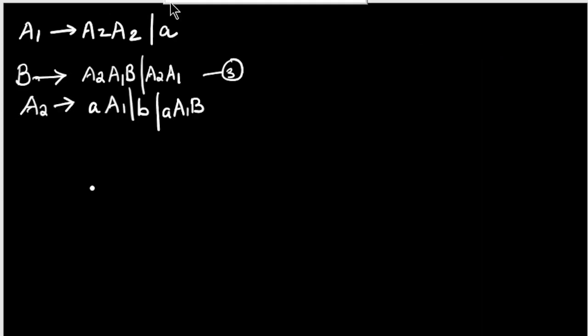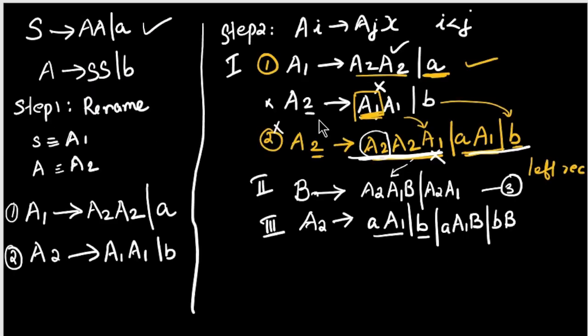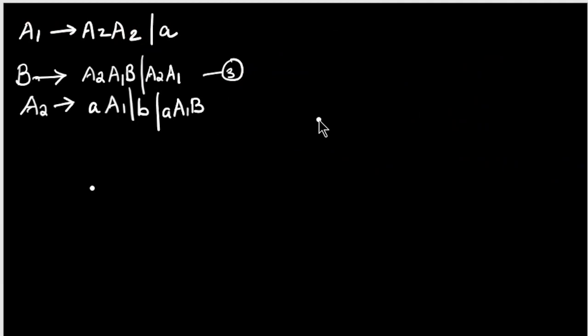After steps 2 and 3, our productions are: A1 gives A2 A2 and A1 gives a. For B: B gives A2 A1 B and B gives A2 A1. For A2: A2 gives a A1 B and A2 gives a A1. And also B gives b.